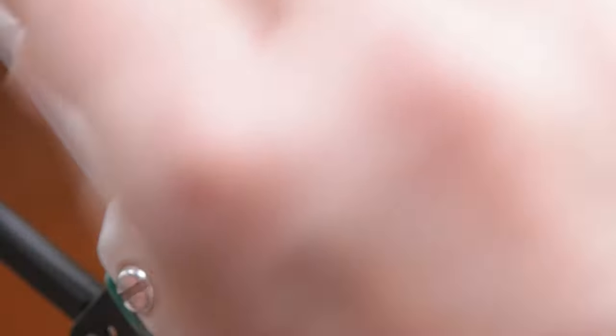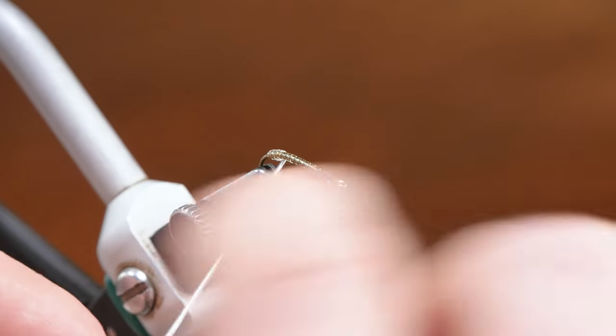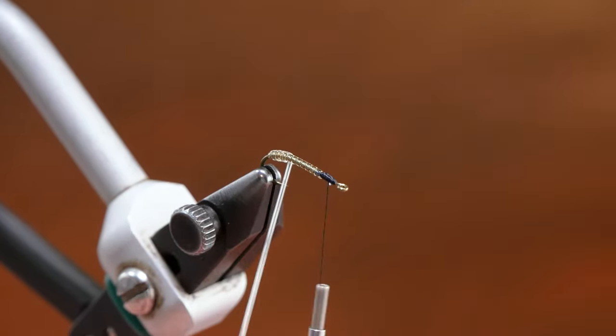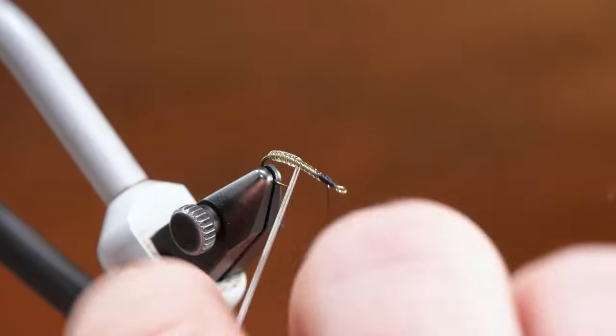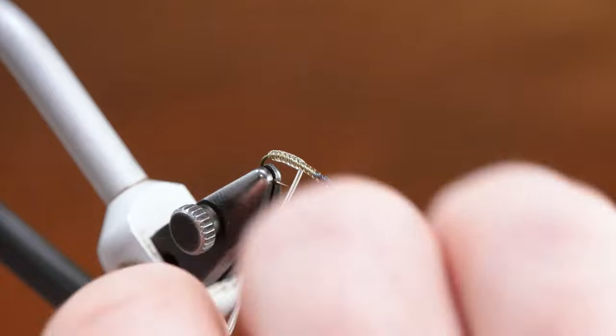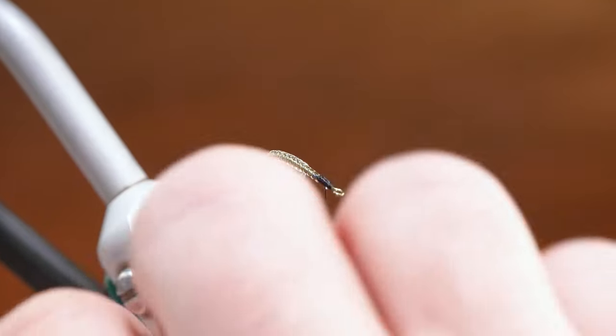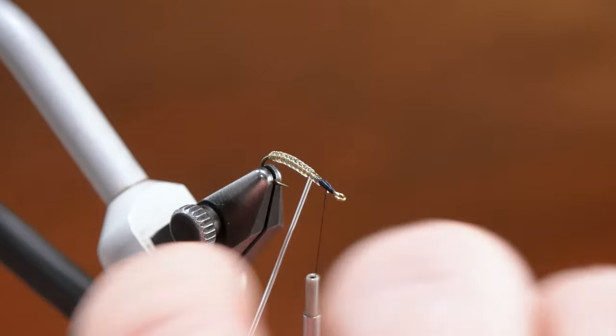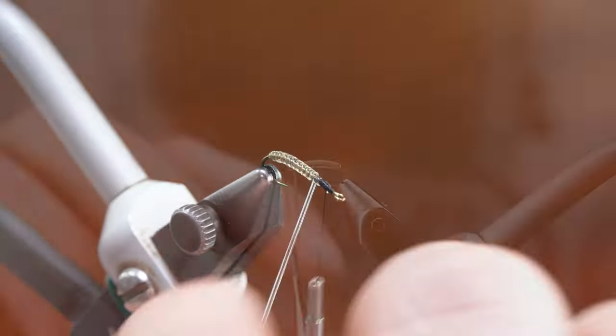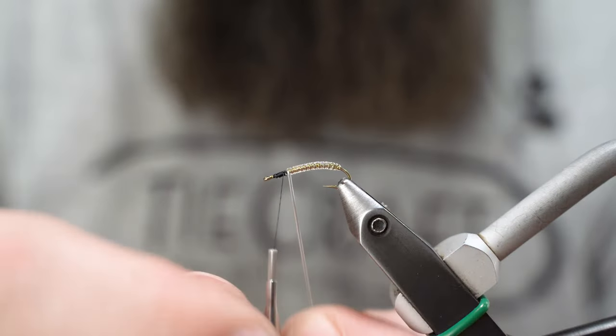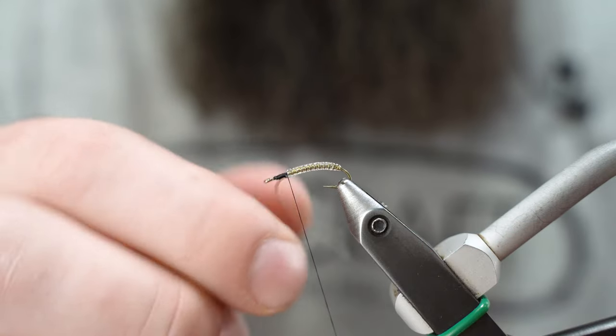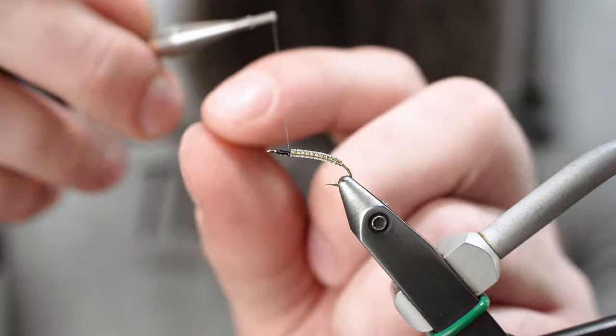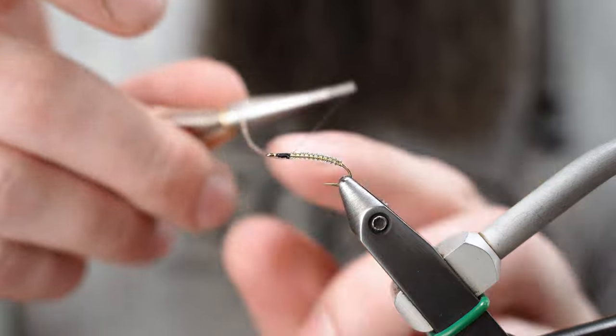I'm going to have to pull pretty tight to make that wrap back over. That's a lot of the reason why we're pulling pretty tight on this, is because we're doubling this up. We'll go over this with glue at the end of the fly. Just want to make sure that you're pulling really tight on that.